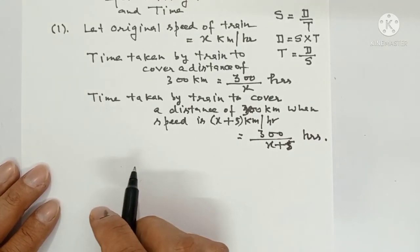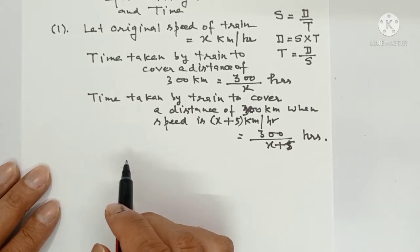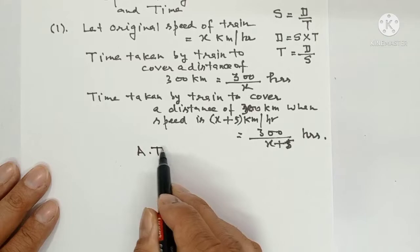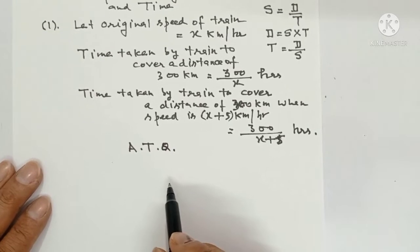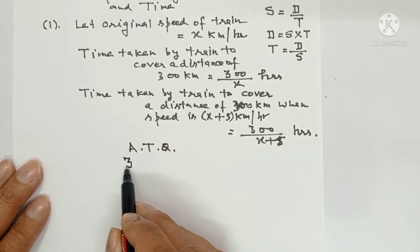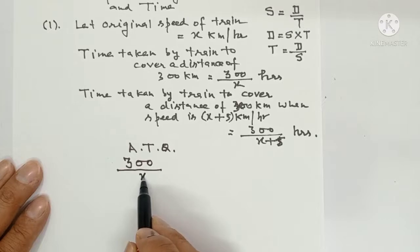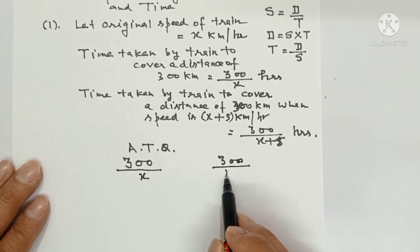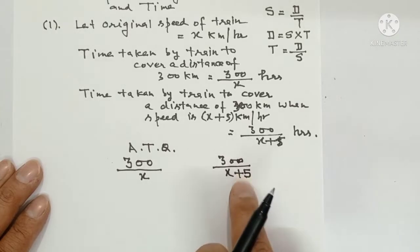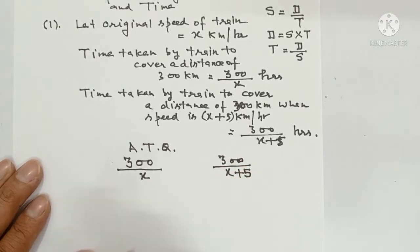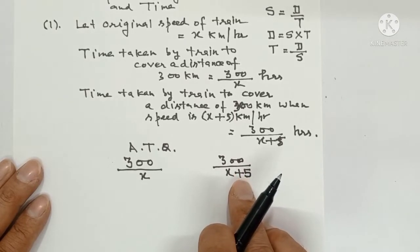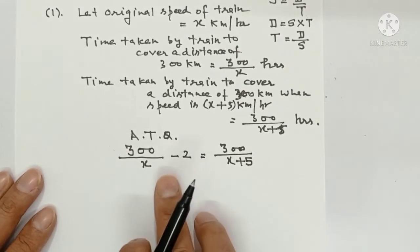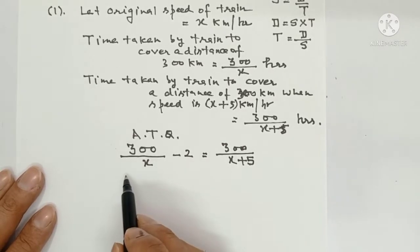Now, it is given that when this speed is increased by 5 km per hour, the journey would have taken 2 hours less. So according to question, the time which was being taken by train with usual speed of x km per hour that was 300 upon x, and with increased speed it is 300 upon x plus 5. In the question it is written, in this case time is reduced by 2 hours. So we will subtract 2 hours from this original time.